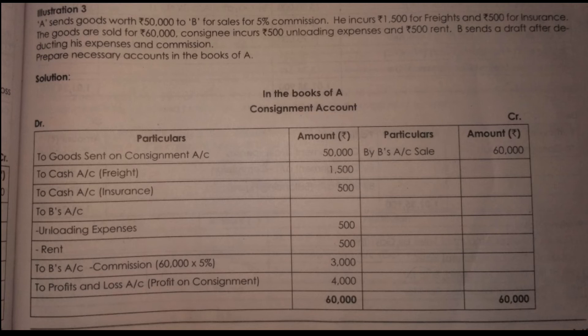On the debit side, 50,000 — that's why we can add insurance. Next, goods are going to sell at 60,000. This is the sales. On the credit side, sales are going to be 60,000.